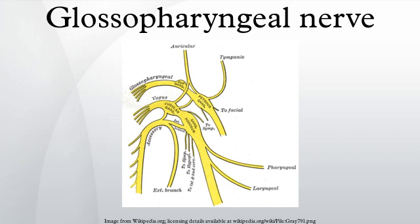The glossopharyngeal nerve is a mixed nerve consisting of both sensory and motor nerve fibers. The sensory fibers' origins include the pharynx, middle ear, posterior one-third of the tongue, and the carotid body and sinus. These fibers terminate at the medulla oblongata. The motor fibers' origin is the medulla oblongata, and they terminate at the parotid salivary gland, the glands of the posterior tongue, and the stylopharyngeus muscle.